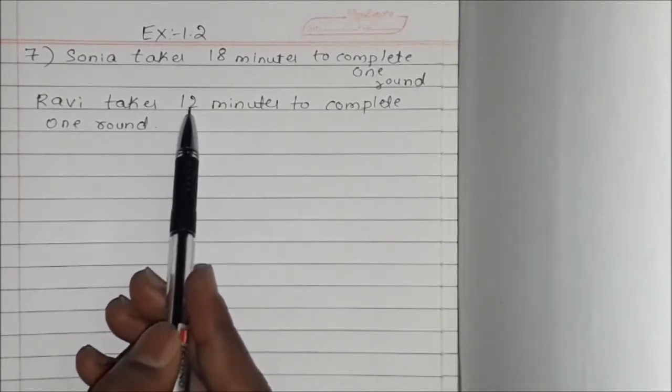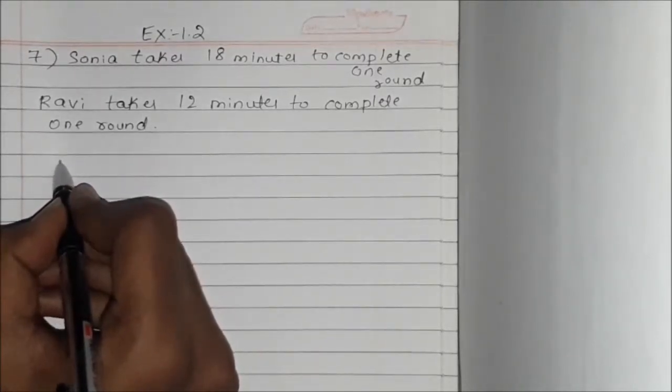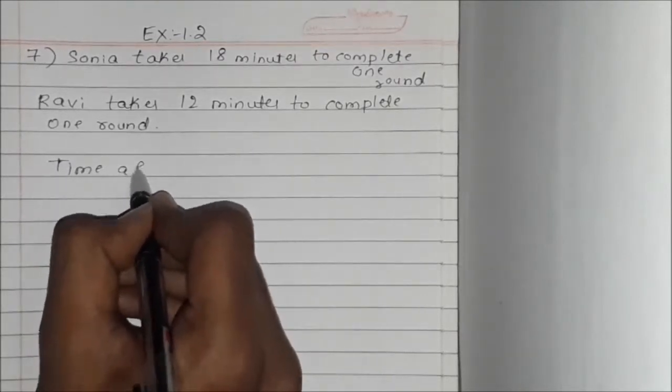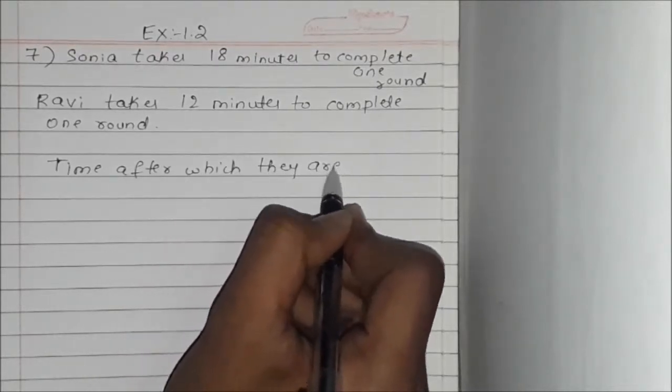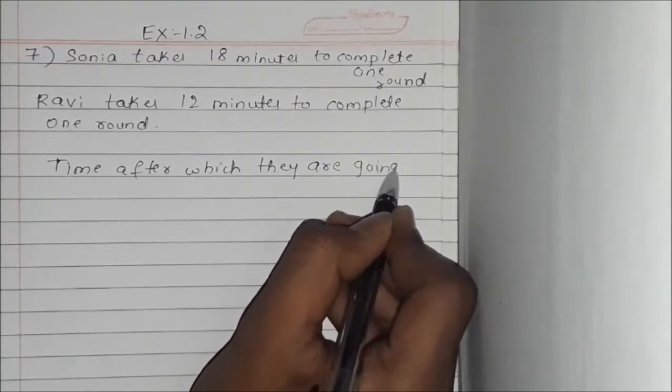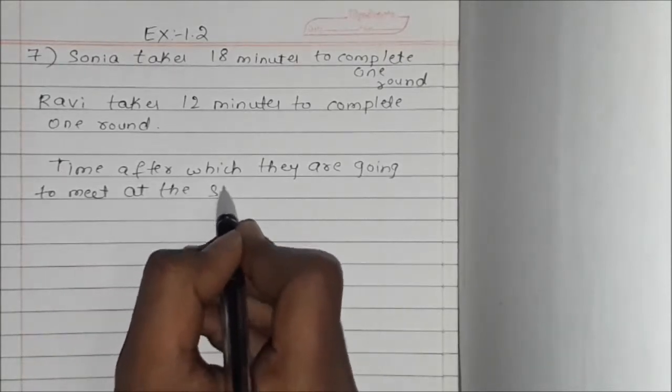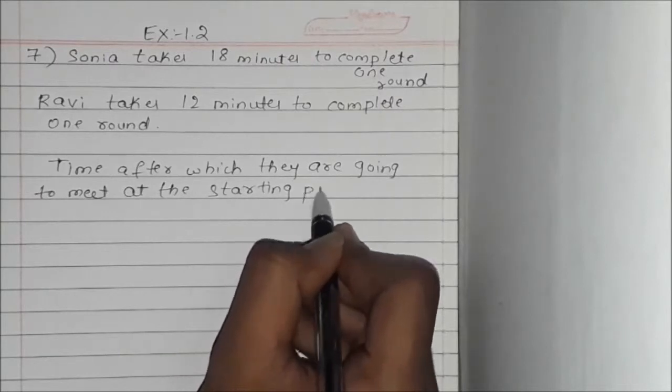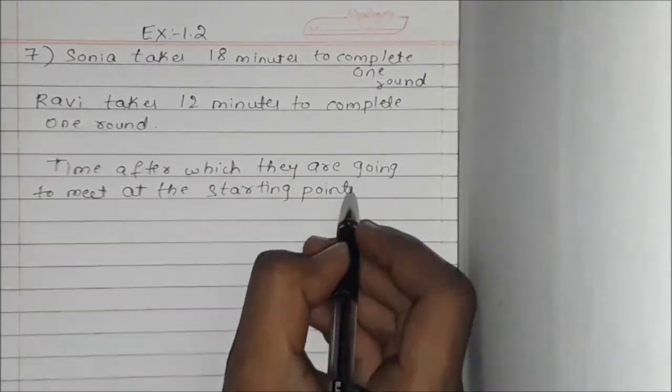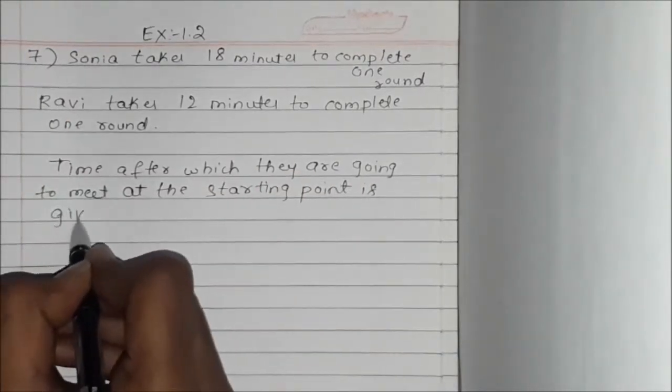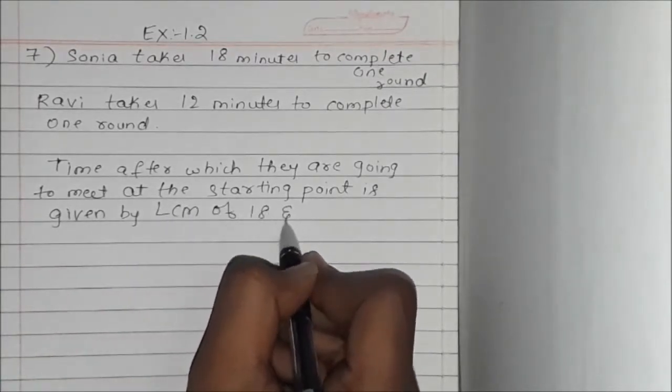If you find the LCM of these two numbers, we can find the time after which they are going to meet at the starting point. Time after which they are going to meet at the starting point is given by the LCM of 18 and 12.